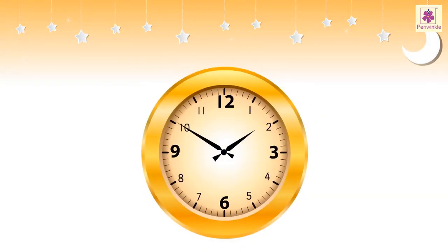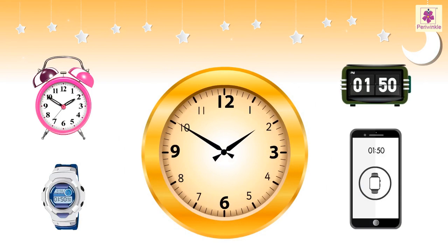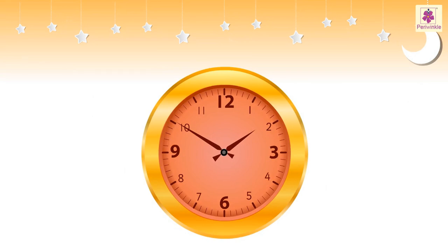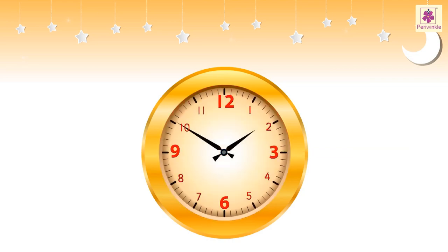This is a clock. We use a clock to tell the time. The flat surface of the clock is called its face. The face of a clock has numbers from 1 to 12. A clock has two hands: a short hand and a long hand.